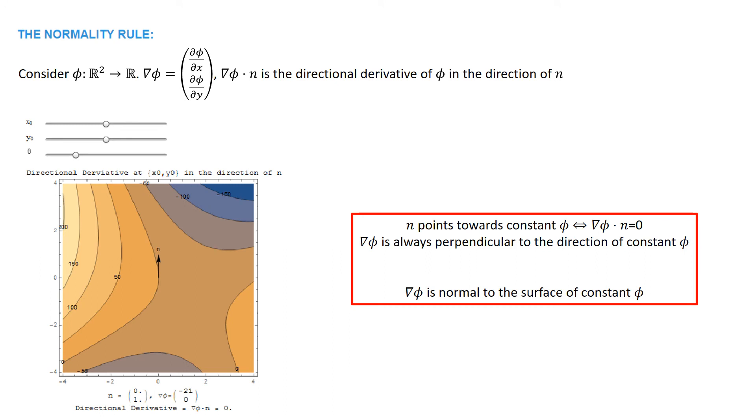To summarize, if n points towards constant φ, then the directional derivative is equal to 0. Therefore, the gradient of φ is always perpendicular to the direction of constant φ, and the gradient of φ is normal to the surface of constant φ.